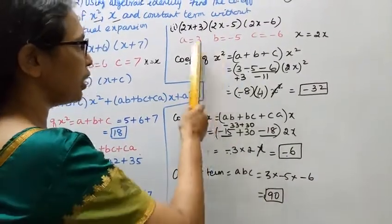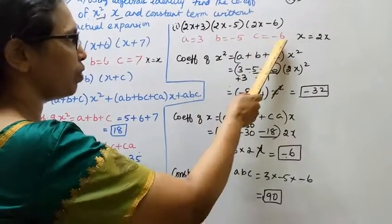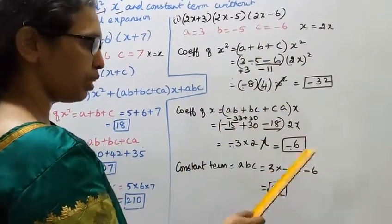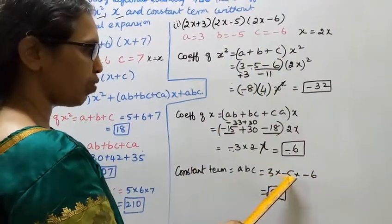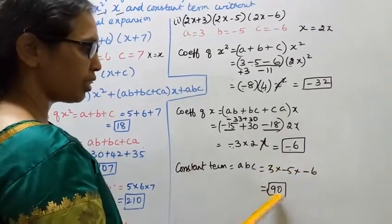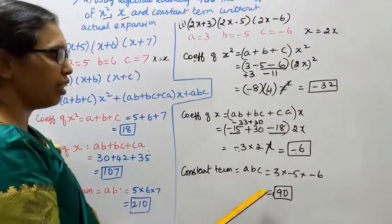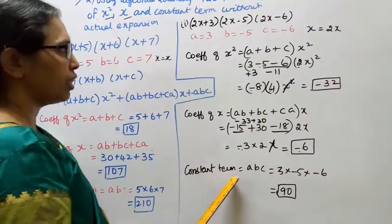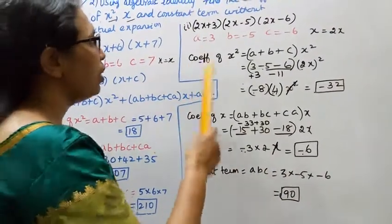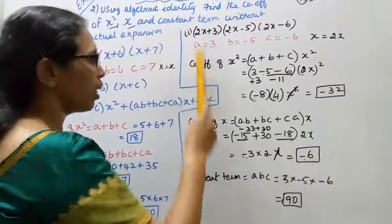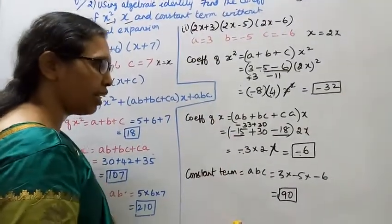Constant term is abc. So 3 times minus 5 times minus 6. Minus times minus is plus, so 3 times 5 is 15, and 15 times 6 is 90. The constant term is 90.